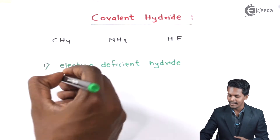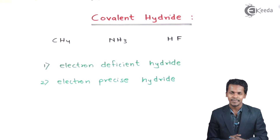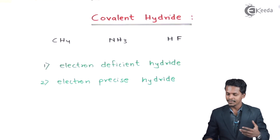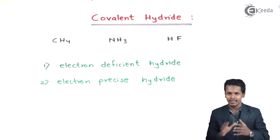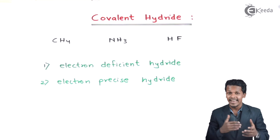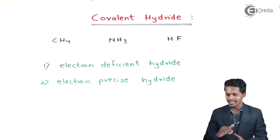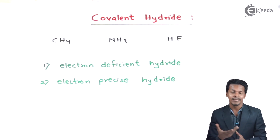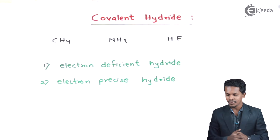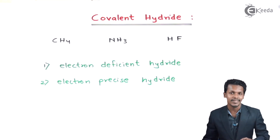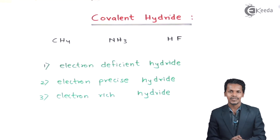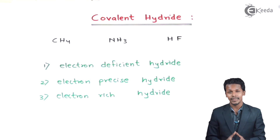The second type is electron-precise hydrate. In this case, there is no extra lone pair of electrons on the central atom, nor is there a deficiency of electrons compared to the octet. So it is very precise — that is the reason electron-precise hydrates are so named. The third classification is electron-rich hydrate.